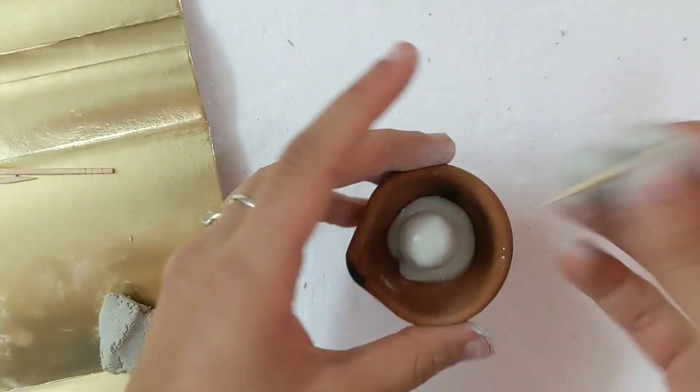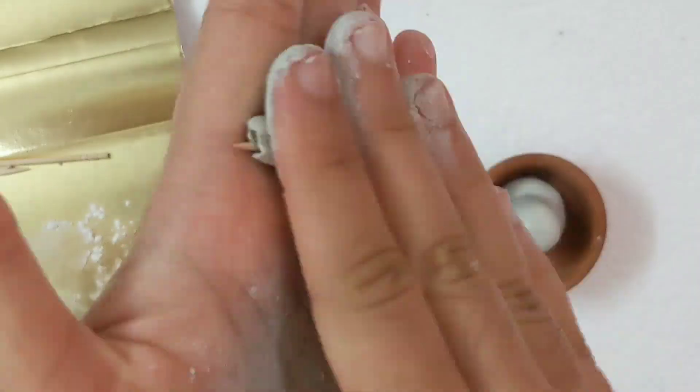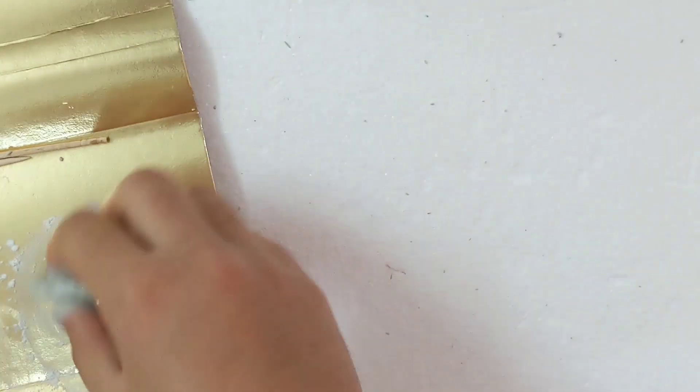Now cut the toothpick according to the height you need for your snake. This will help the snake to stand right in its place.